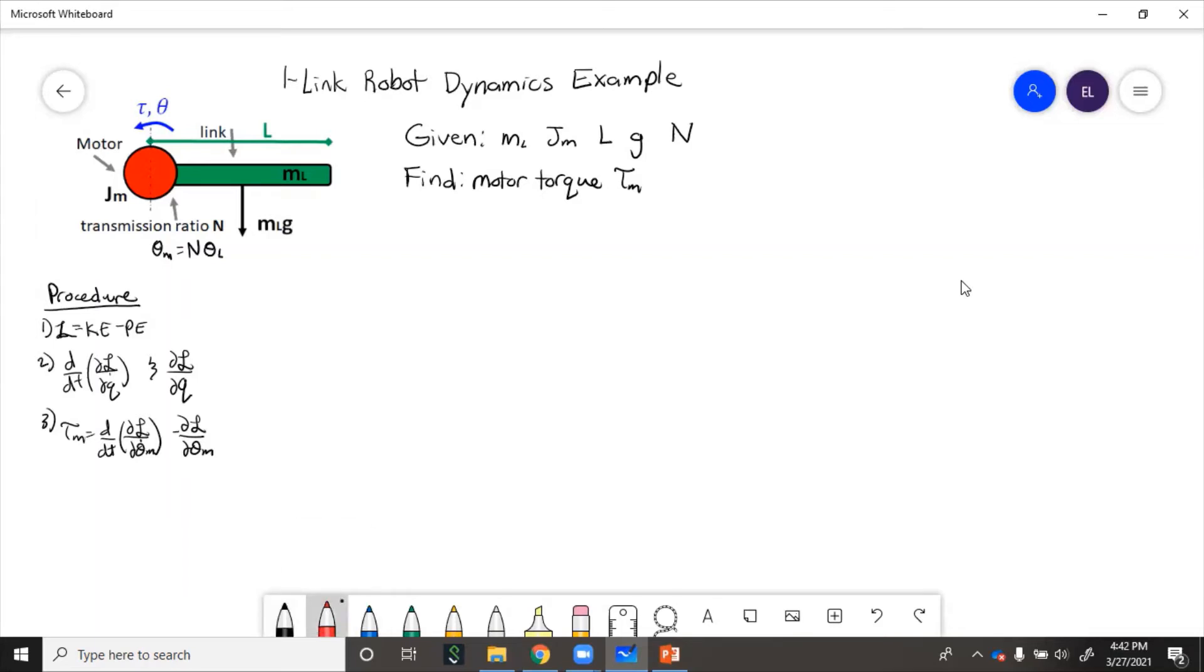Starting out, let's write the kinetic energy. This is a general formula. We have two parts: we have the motor and we have the link, so we need to use both of those. For the motor, that's pretty straightforward.